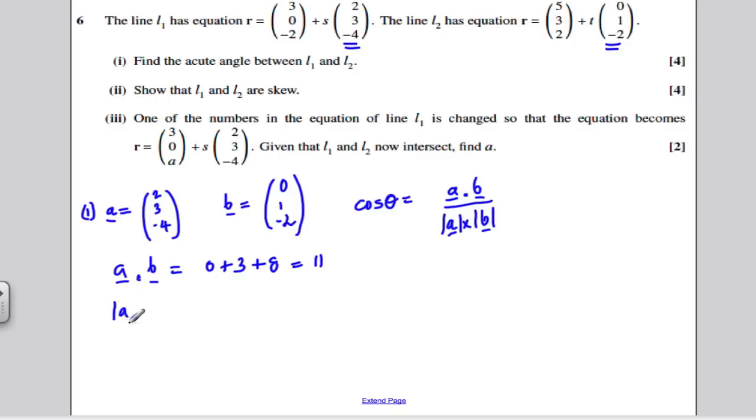Right, what's the modulus of A? What's the size of vector A? Well, it's 2 squared plus 3 squared plus minus 4 squared. So what does that equal? 4 plus 9 is 13, plus 16 is 29, so that's the square root of 29.